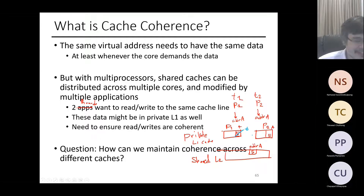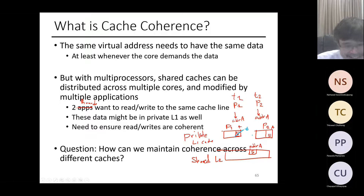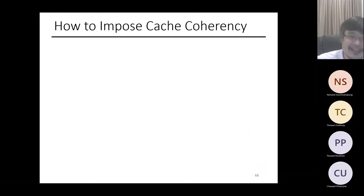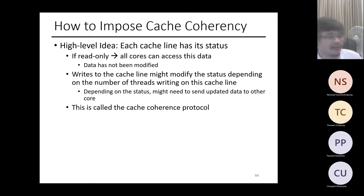Is that a problem? Yes, because processor two reads the old value. The issue is: how can we make sure processor two is communicated to and told that the number is actually six? That's the core problem — we need to maintain coherency across all the different caches in a multi-core processor.